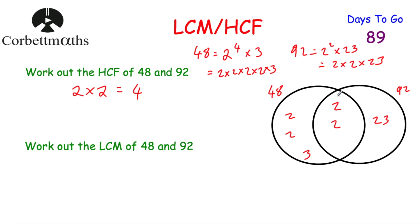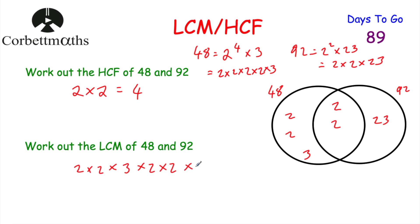To find the lowest common multiple, multiply all the numbers in the Venn diagram together: 2 × 2 × 3 × 2 × 2 × 23. On a calculator, that gives 1,104. So the lowest common multiple of 48 and 92 is 1,104.